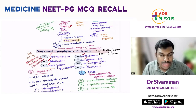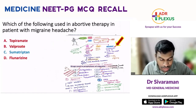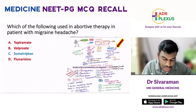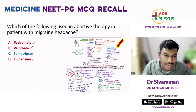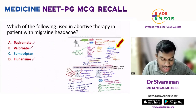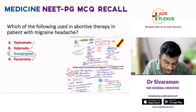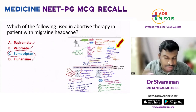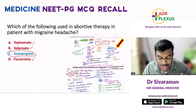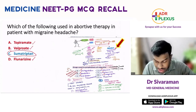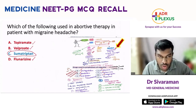Coming back to the question: topiramate, valproate, and flunarizine are used in prophylaxis, whereas sumatriptan is used in treatment of acute migraine headache. This is the first related topic and I hope the answer is clear.